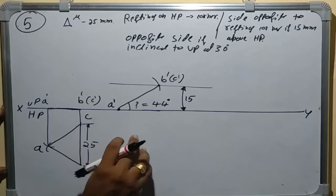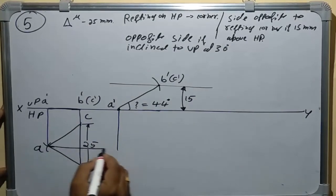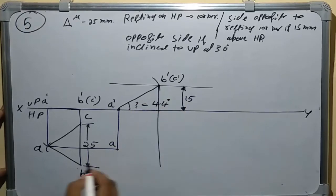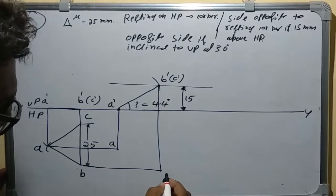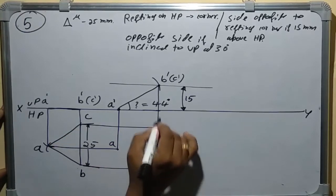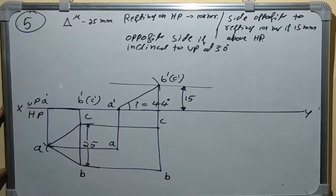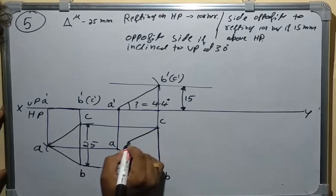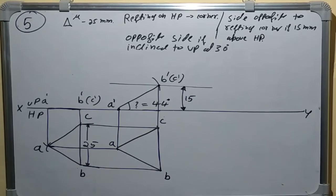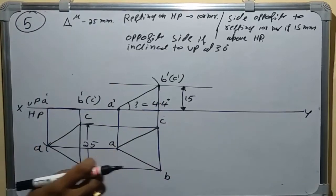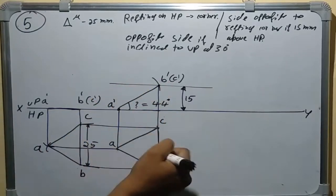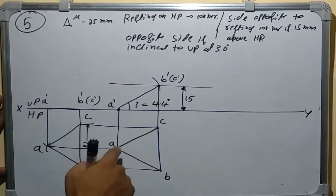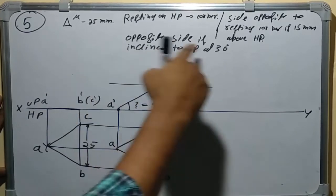To get the top view, we draw vertical projections from A dash to get A, and from B dash and C dash to get B and C respectively. We join A to B, B to C, and C back to A. The shape may vary slightly since exact dimensions were not used in this demonstration, but with proper dimensions you will get the correct shapes. For the last step, the side BC — opposite the resting corner — is inclined to VP at 30 degrees. We take a reference point, measure 30 degrees, and draw that line.